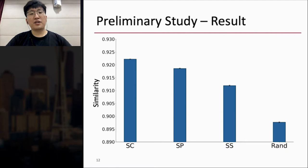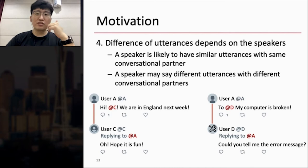So this figure shows the result. X-axis is each category and the Y-axis is the similarity between utterances in the category. And Same Conversation shows the highest similarity, and then Random shows the lowest one. And when we fix the conversation partner, the similarity of one speaker's utterances is higher than all of the speaker's utterances. So I can say that difference of utterances depends on the speaker.